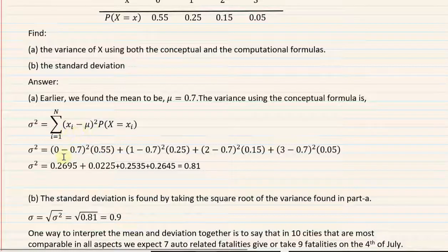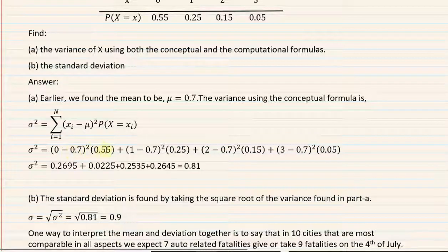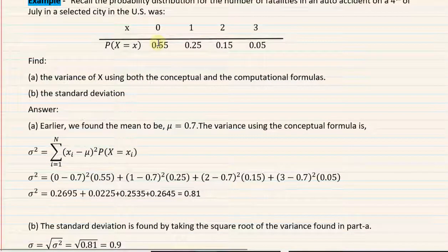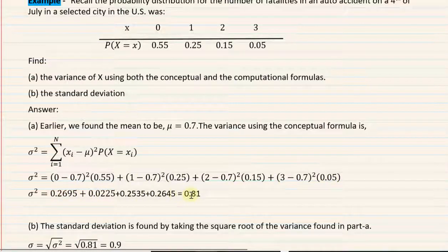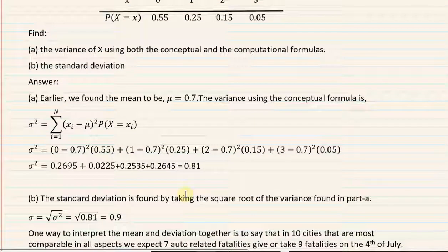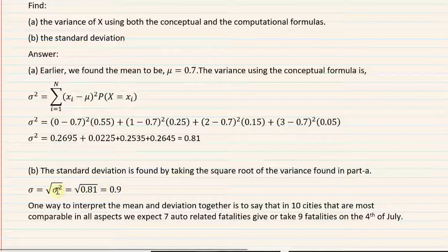For our example: (0 − 0.7)² × 0.55 + (1 − 0.7)² × 0.25 + (2 − 0.7)² × 0.15 + (3 − 0.7)² × 0.05. Doing the arithmetic gives us the variance. The variance in units of accidents-squared is difficult to interpret, which is why we take the square root to get the standard deviation.